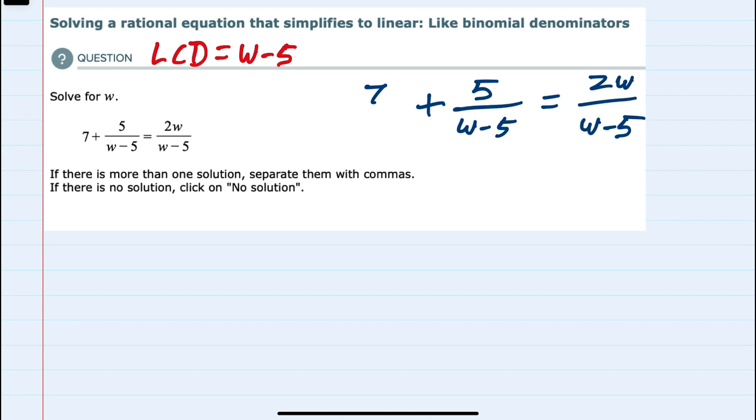Multiplying each term by that lowest common denominator, we would have 7 times w minus 5, 5 over w minus 5 times w minus 5, and 2w over w minus 5 times w minus 5.